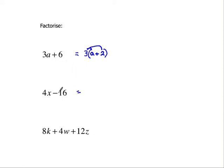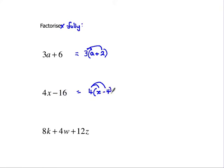Next one. Take out the common factors — what's in both of these. 4 is in both of these. I'm always going to try to take the biggest possible number, because it should technically say factorise fully. You could take 2, but 2 wouldn't be the best answer. To do it fully, you've got to take 4. So 4 lots of x gives me 4x, and 4 lots of minus 4 gives me minus 16. Check it works: 4 lots of x is 4x, 4 lots of minus 4 is minus 16.